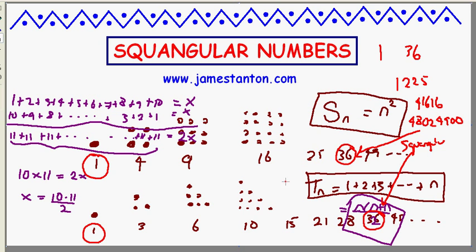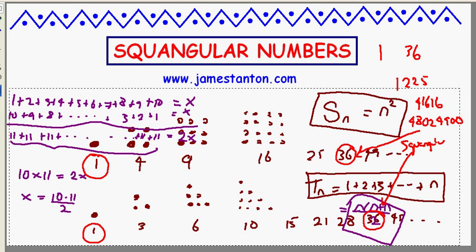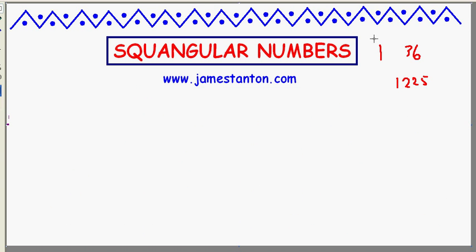And the one after that turns out to be 48,024,900. Crazy, crazy, crazy. So what I'd like to just tease you with is a little formula for the nth squangular number, which is due to Euler, though I should get the full details in the essay I'm posting on the website. So here are the squangular numbers - I'll call them Q_n.